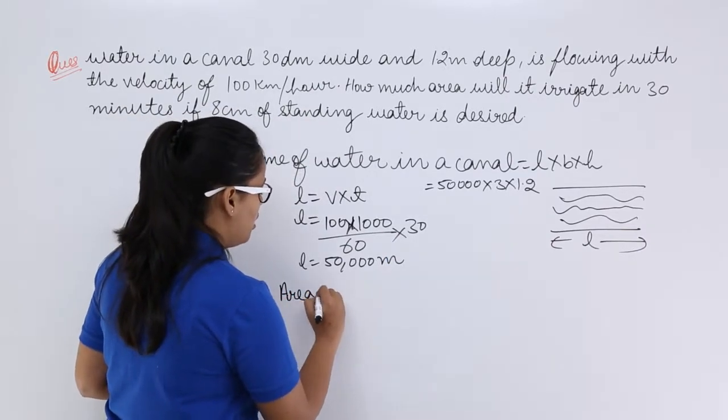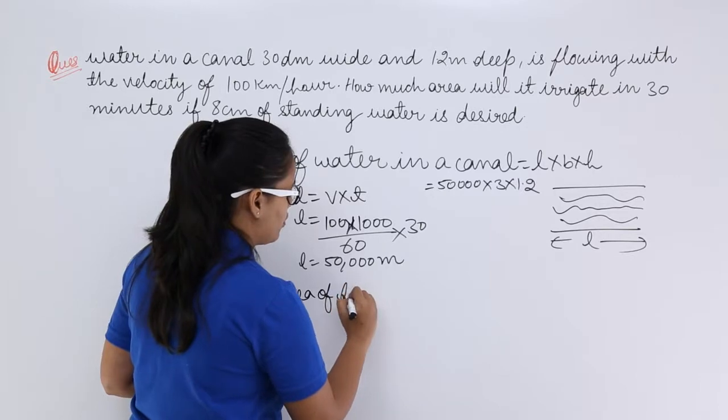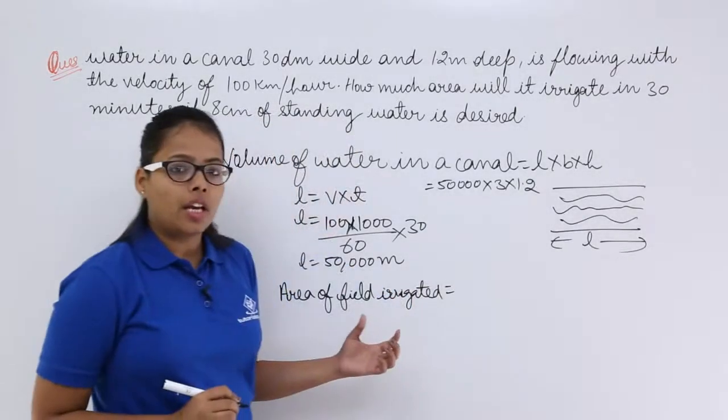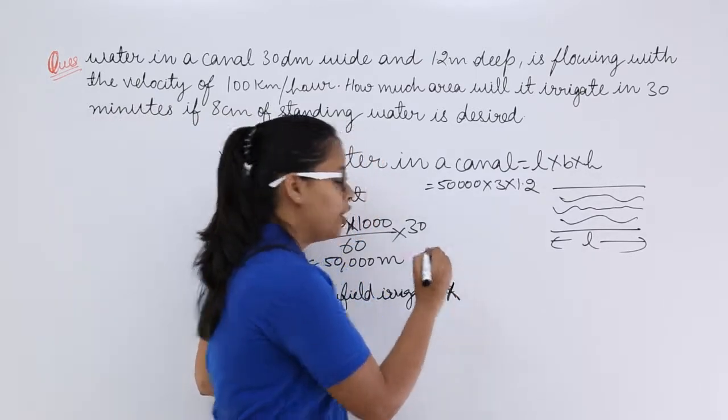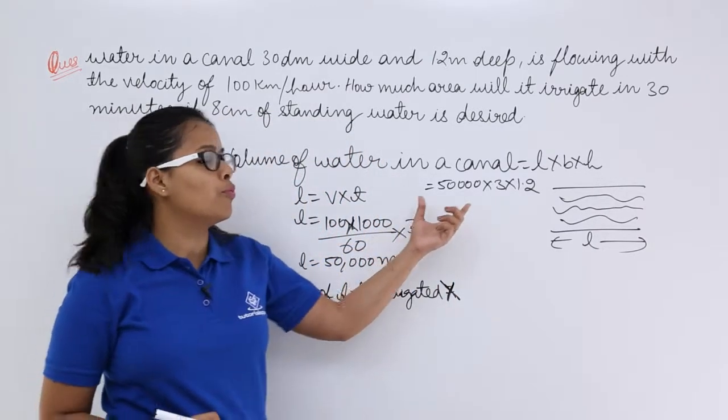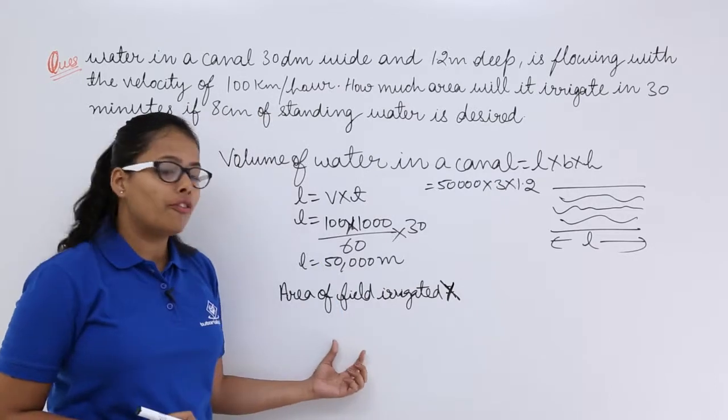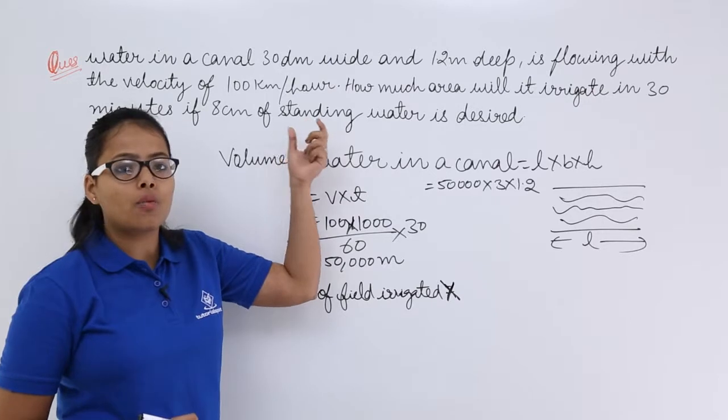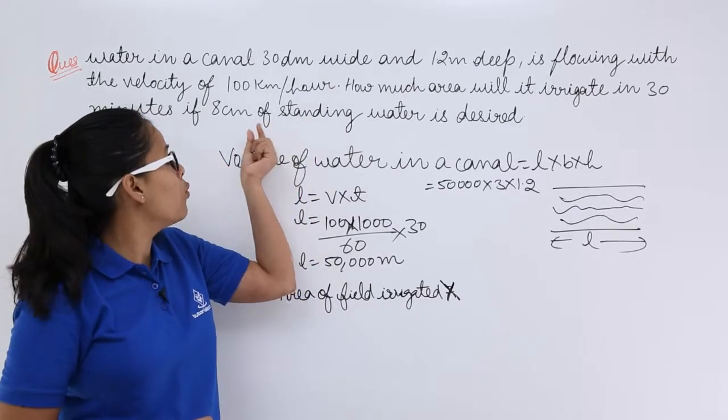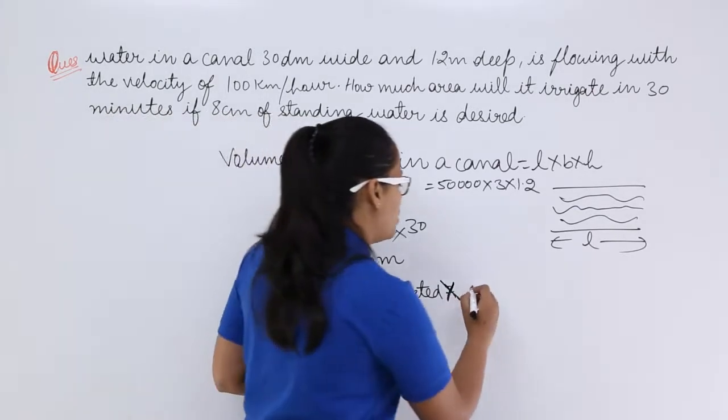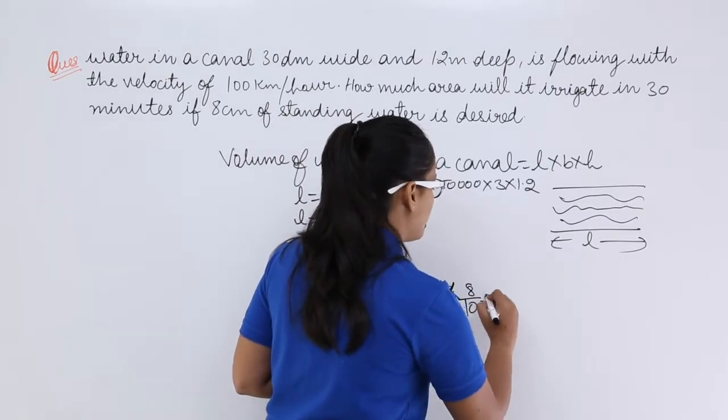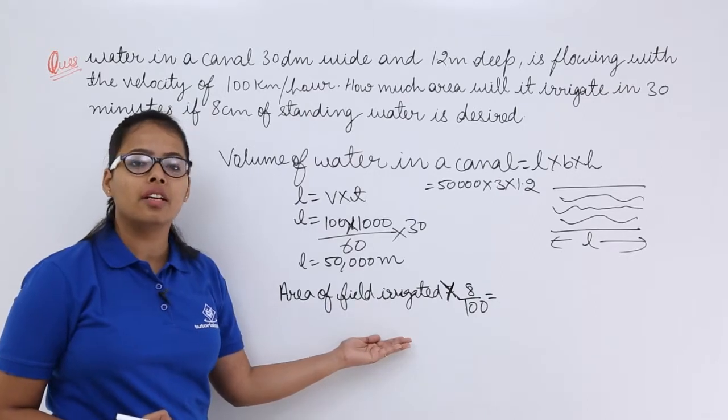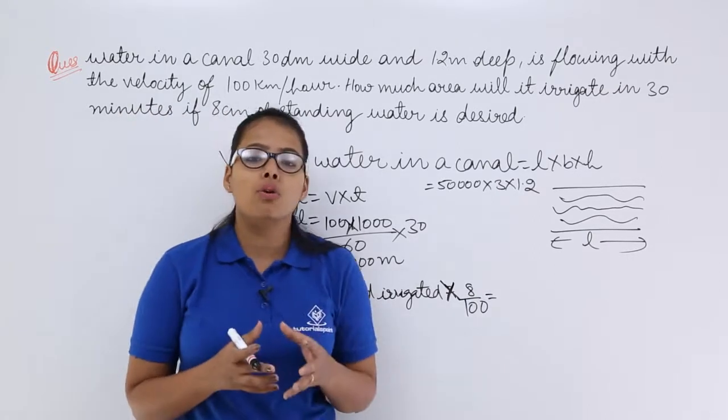So now let's write down area of field irrigated. Area of field irrigated using this much volume of water. You know the area of field irrigated and you know in this area standing water, depth of standing water or you may say height of standing water is 8 centimeter. So you will convert this unit into meters first.